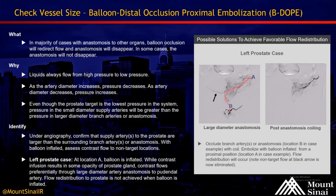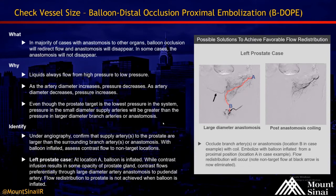This slide depicts an embolization technique called BDOPE — balloon distal occlusion proximal embolization. What we're seeing here is how a large-diameter anastomosis can be coiled, and then the catheter moved distally. This has a lot to do with pressure and vessel size. The bigger the diameter of the vessel, the lower the pressure, so we have to think about the sizes of these anastomoses as we embolize. In cases like this you can coil distally after embolizing proximally, and the image on the right shows how the pressure changes after embolization.